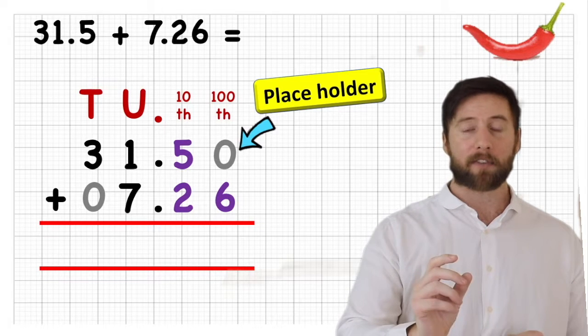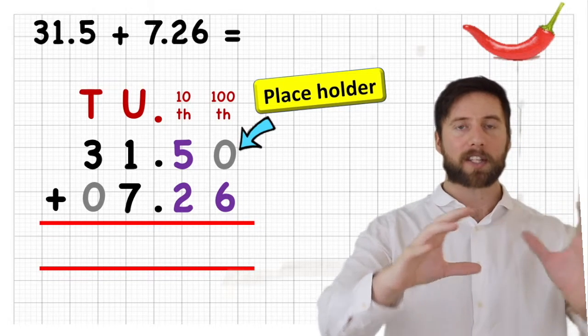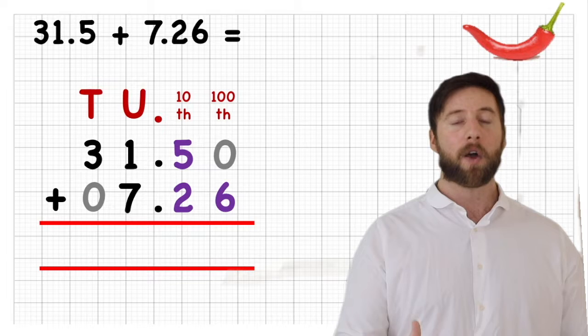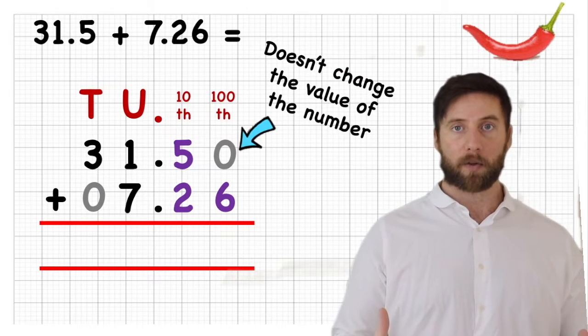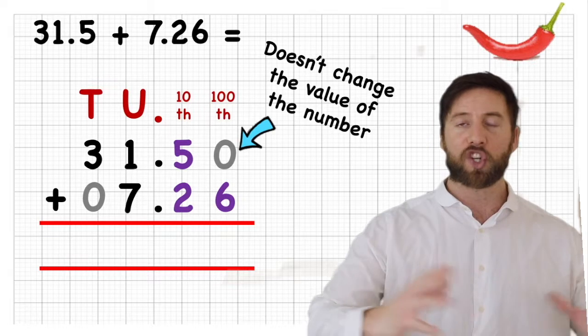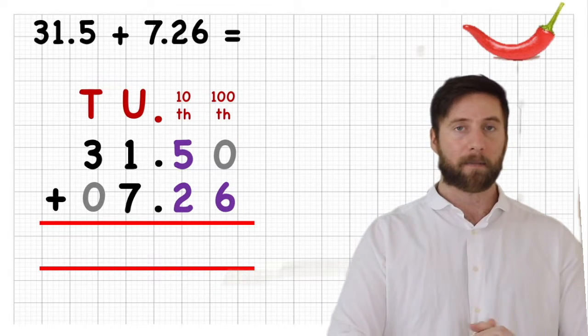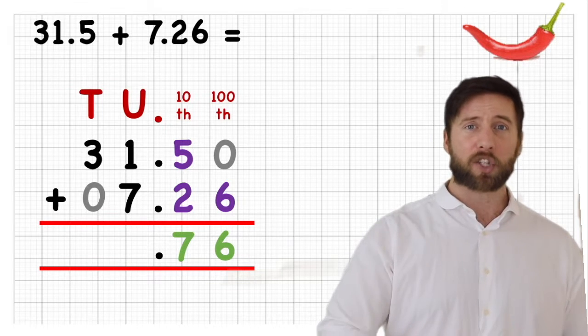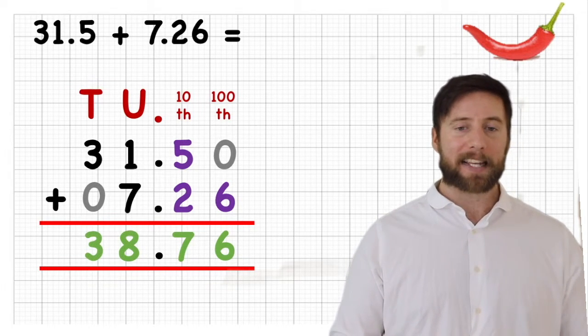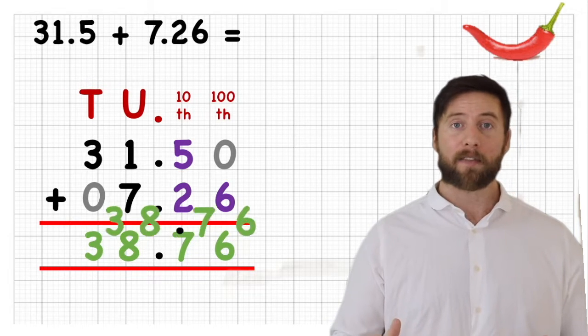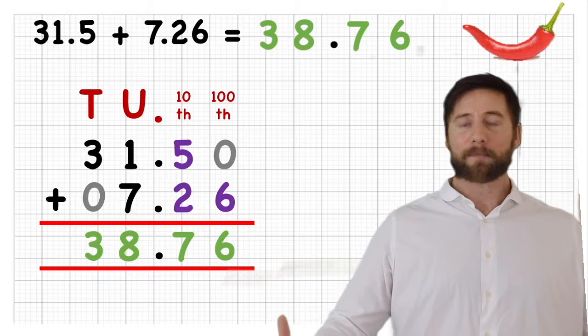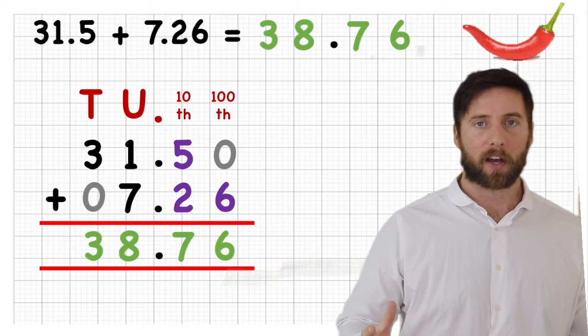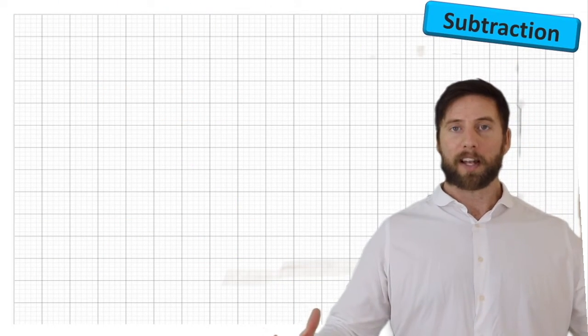We can put it there so that we can have the same amount of digits in both of our numbers. So I've got 31.50 add 07.26. Now, it's really important to understand what these placeholders are, because we're not just putting a random number in there. We're putting a zero, something that doesn't hold any value. Adding a zero to the beginning or end of a number doesn't change it at all. Now, we're just going to solve this from the smallest value, which in this case is hundredths. So zero add six is six, five add two is seven, one add seven is eight, and three add zero is three, leaving me 38.76. Well, that is about as hard as decimals can get in addition.